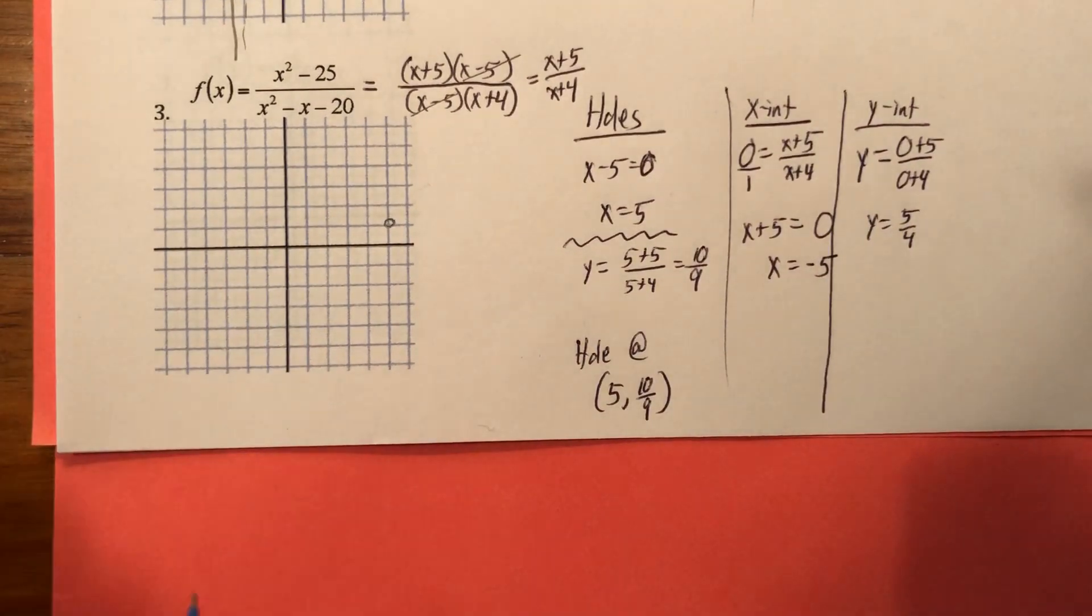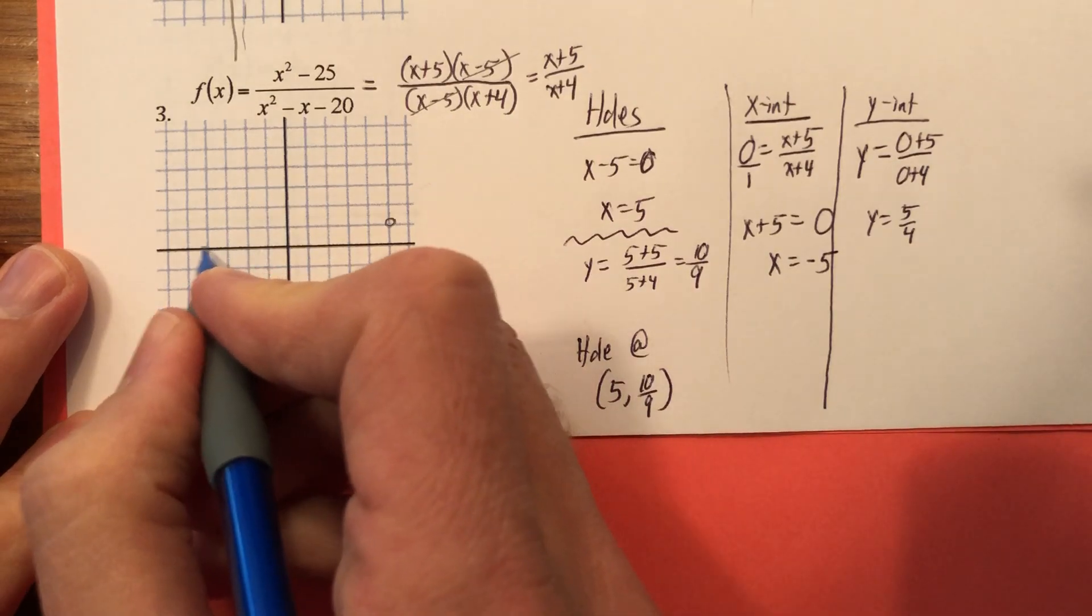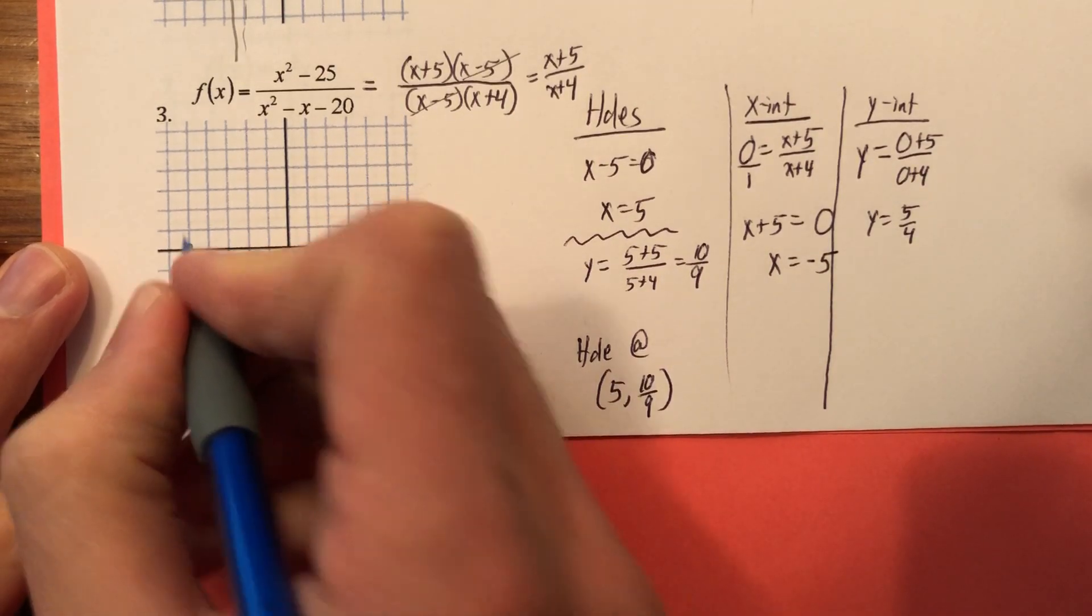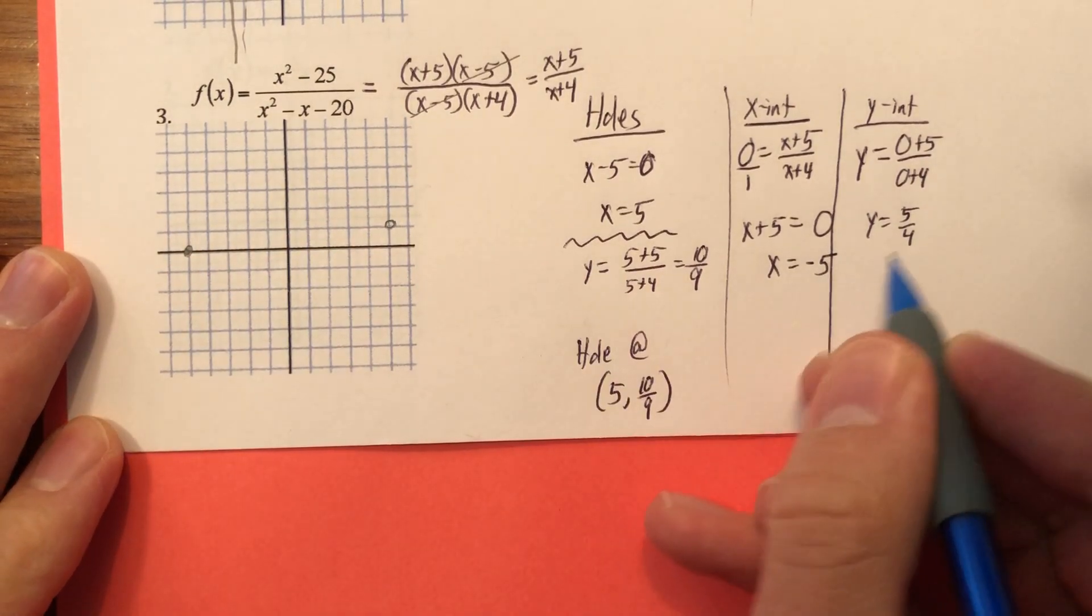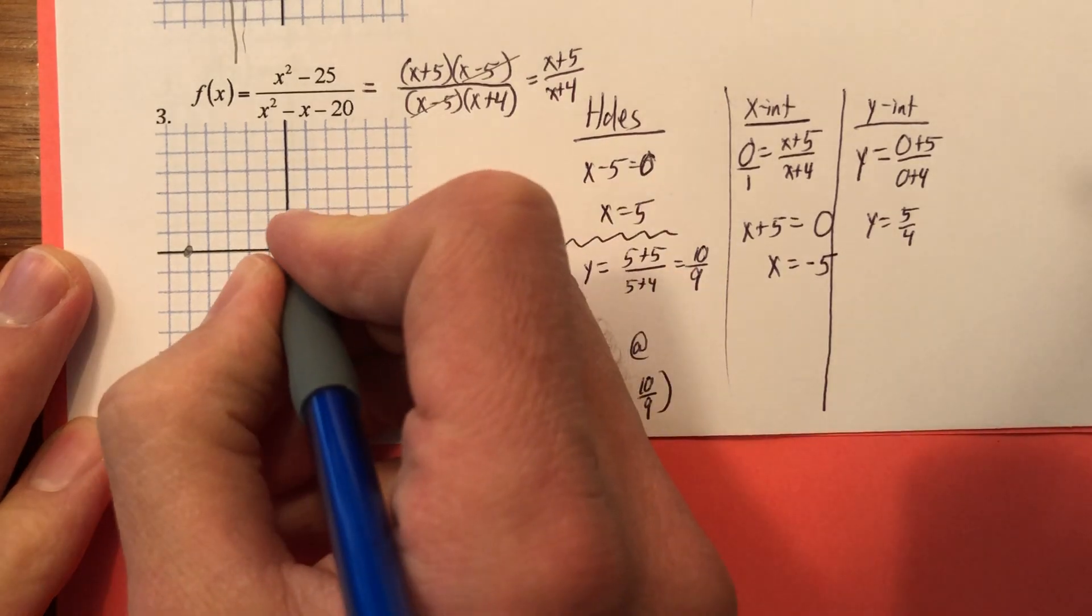So my X intercept is 1, 2, 3, 4, 5. There we go. Was looking here when I put that dot. Now I'm looking here. So up 1 and a quarter.